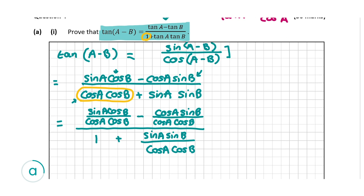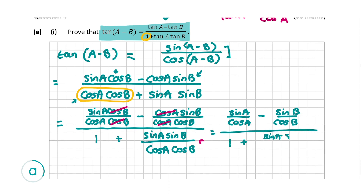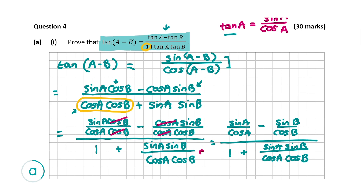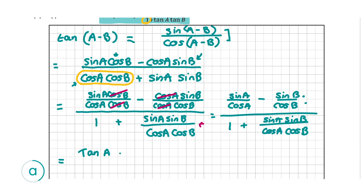Now let's see what we can cancel. In the numerator's first term, cos B cancels above and below, and in the second term cos A cancels above and below. We're left with sin A over cos A minus sin B over cos B, all over 1 plus sin A sin B over cos A cos B. Going back to the rule from the start — tan A equals sin A over cos A — we use it in reverse. So the numerator becomes tan A minus tan B, which is exactly what we want.